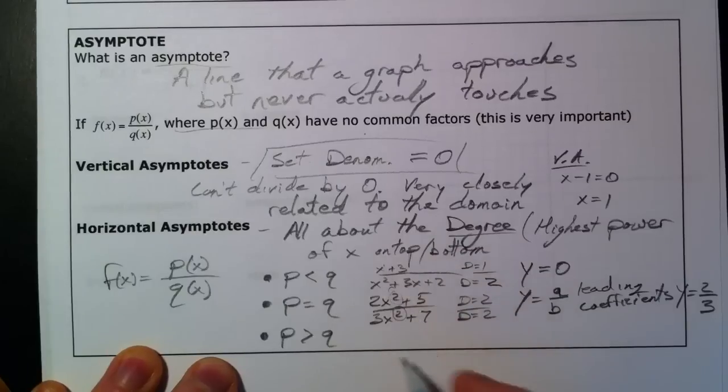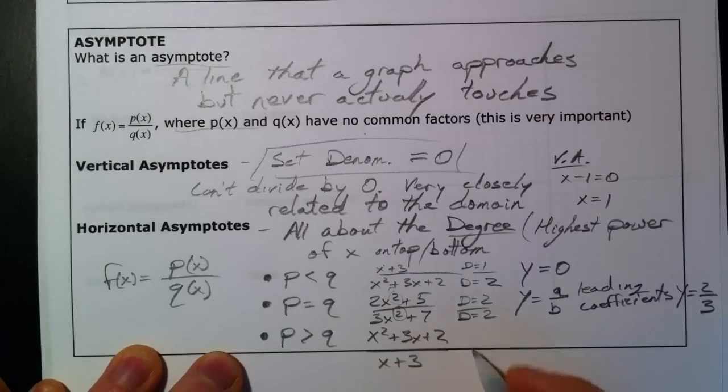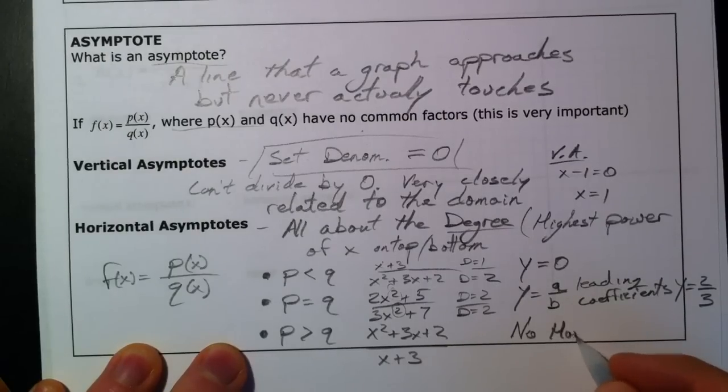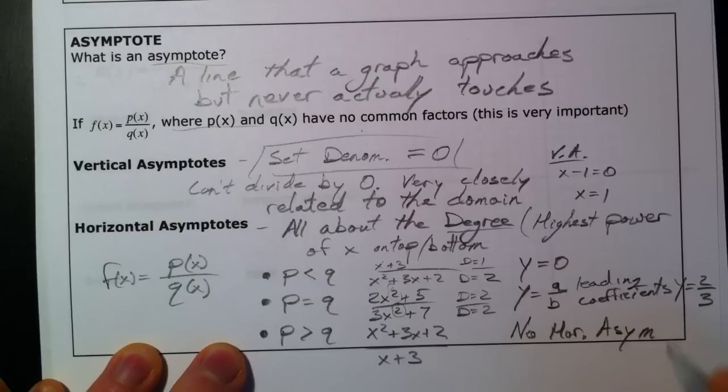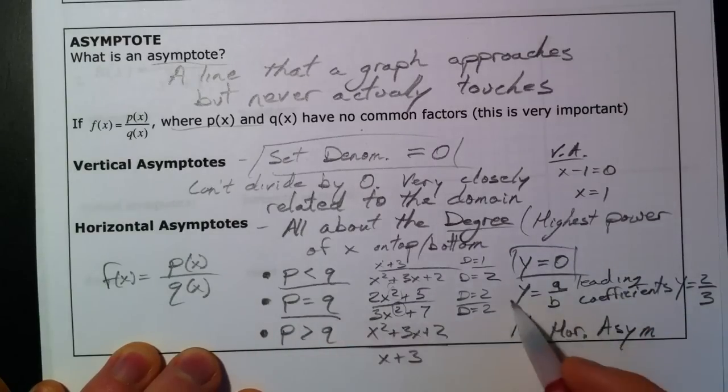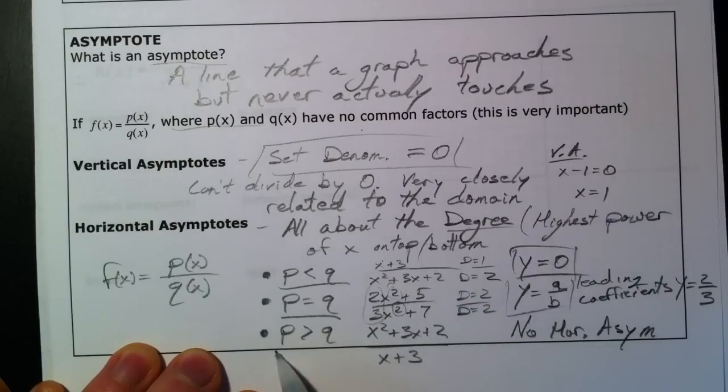Now, if the top is bigger, say we have just the flip of what we did on top. x squared plus 3x plus 2 over x plus 3. Top is bigger than the bottom. P is bigger than q. That means the top is getting a lot bigger. You're dividing by a smaller number. That's not going to give us an asymptote. No horizontal asymptote. And so, p is less than q, y equals 0. p is equal to q, y equals a over b. That's the leading coefficient. So, we took our 2 and our 3. If p is greater than q, we don't get any horizontal asymptotes at all.